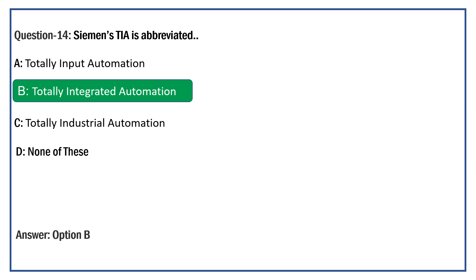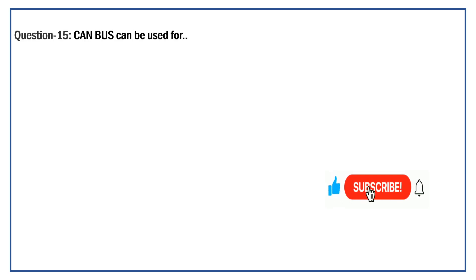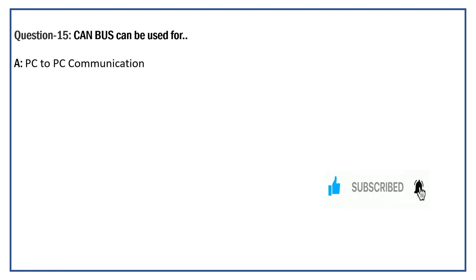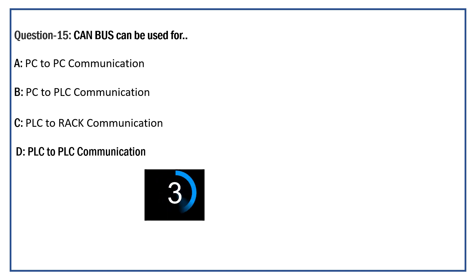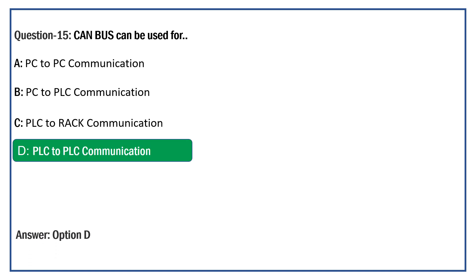The CAN bus can be used for — Option A: PC to PC communication. Option B: PC to PLC communication. Option C: PC to PC communication. Option D: PC to PC communication. The right answer is Option D: PC to PC communication. Yes, CAN bus is a communication protocol which can be used for PC to PC communication.